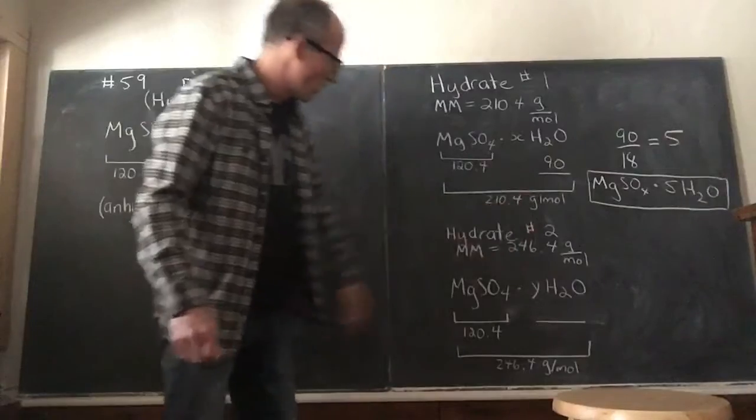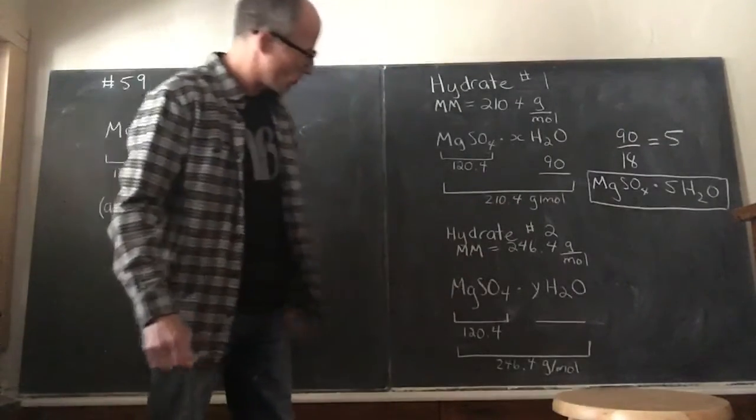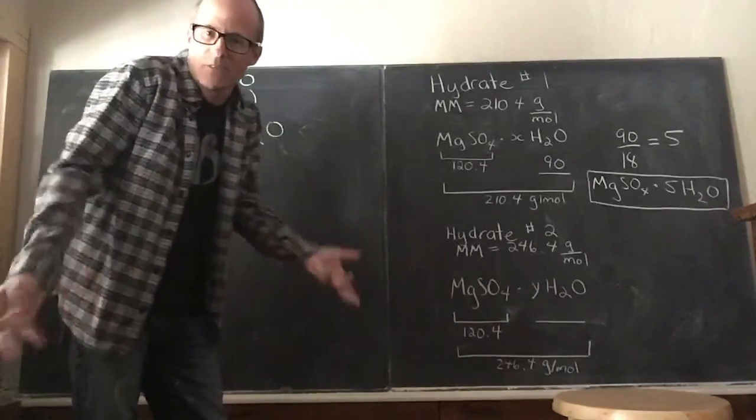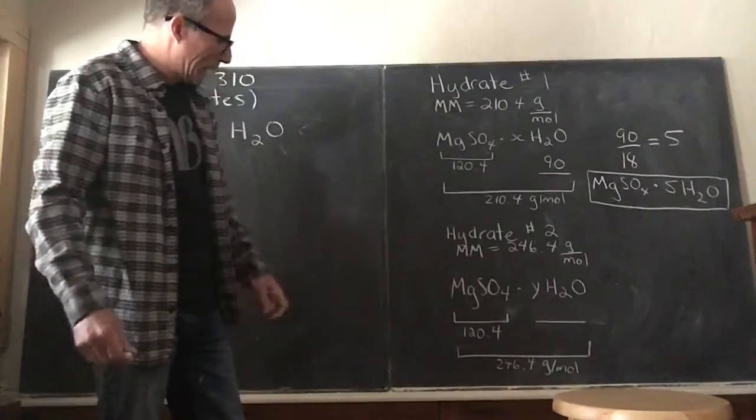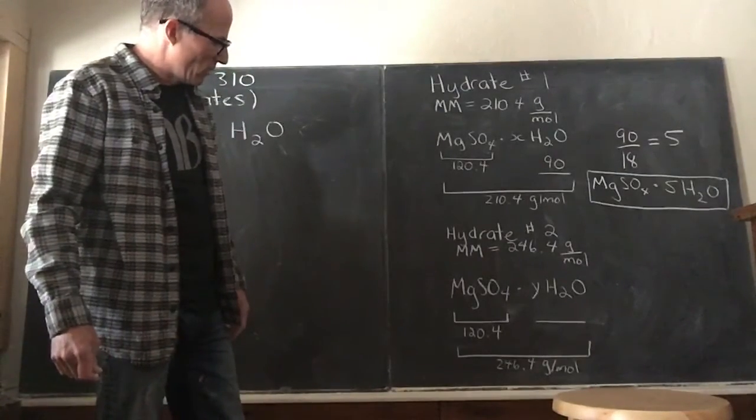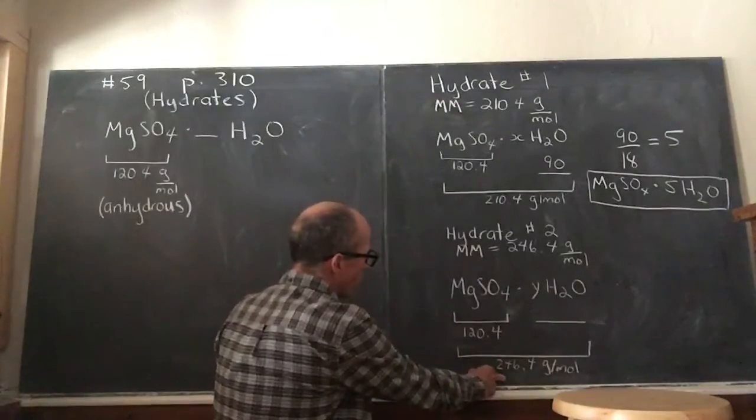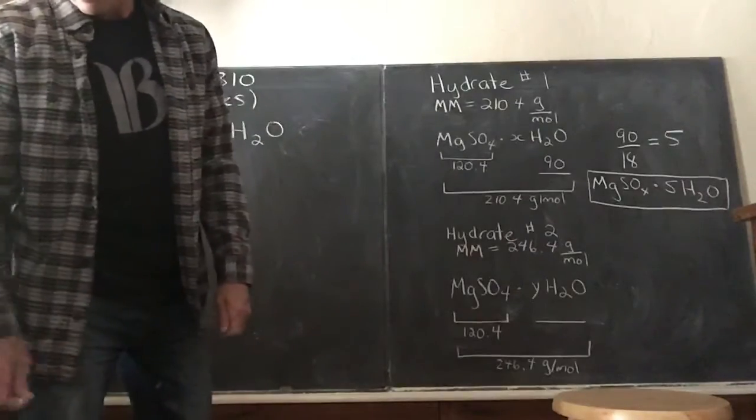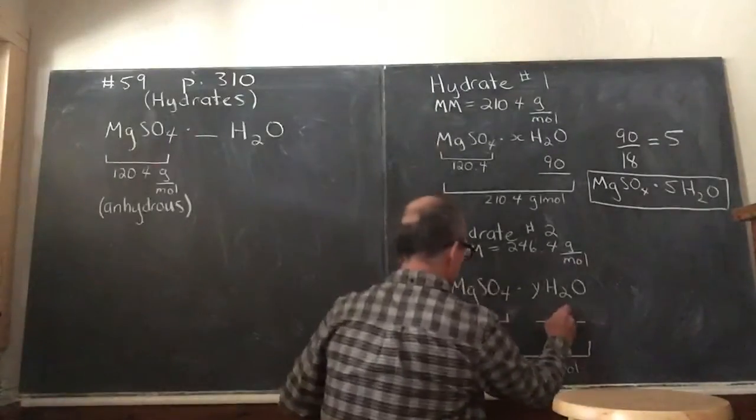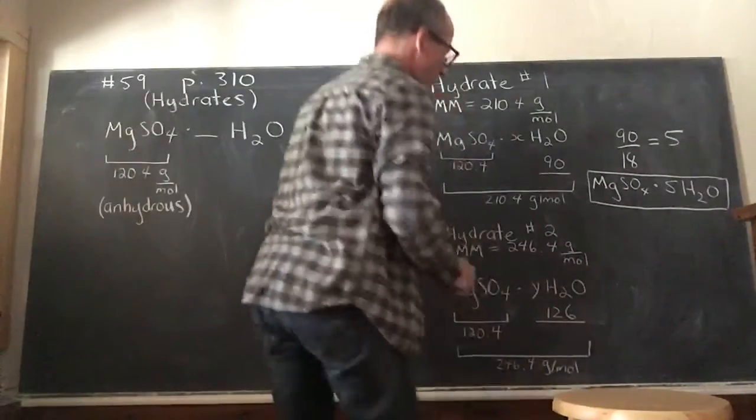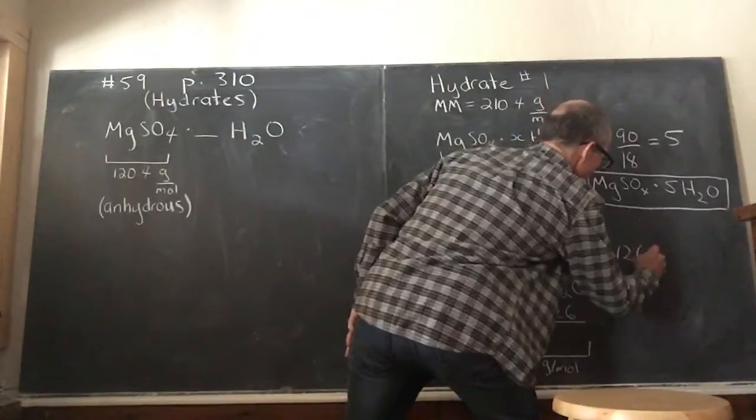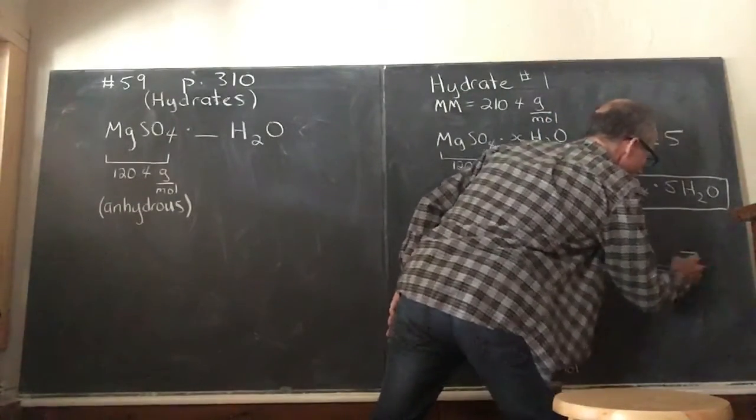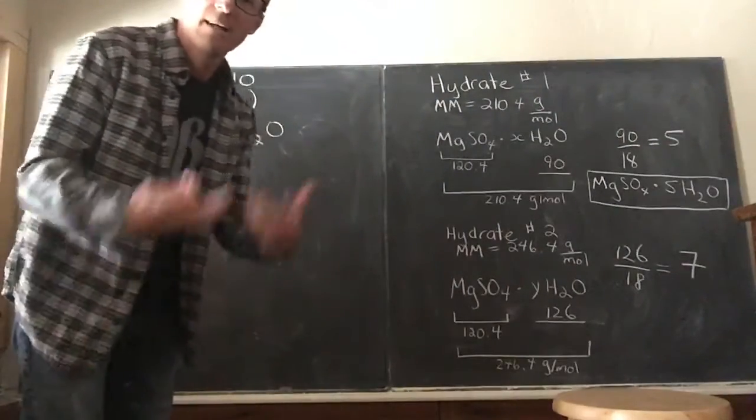So if we adopt a similar strategy, draw the picture—I called the unknown coefficient for water Y this time, it really doesn't matter what you call it—but you can see very easily that the difference between 246.4 and 120.4 is 126. So likewise, if we do our mental math, 126 over 18, which is the molar mass of water, it turns out that that is also a nice round number: seven.